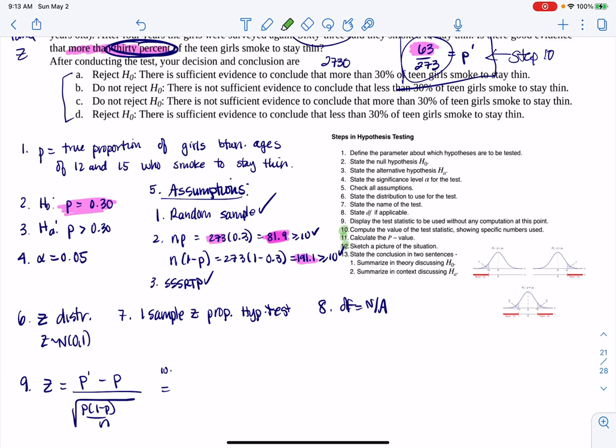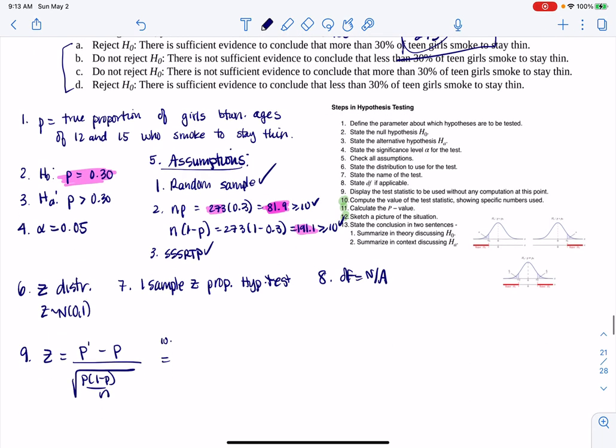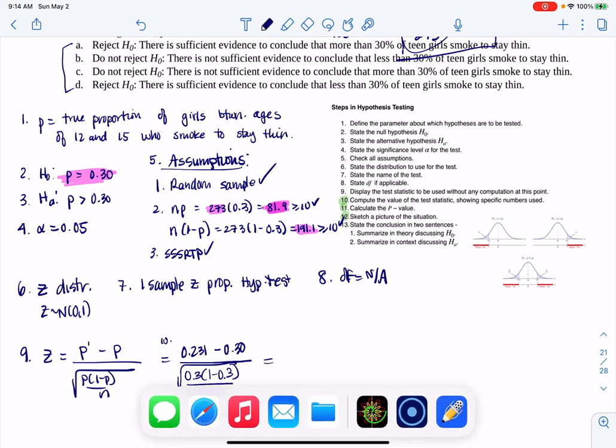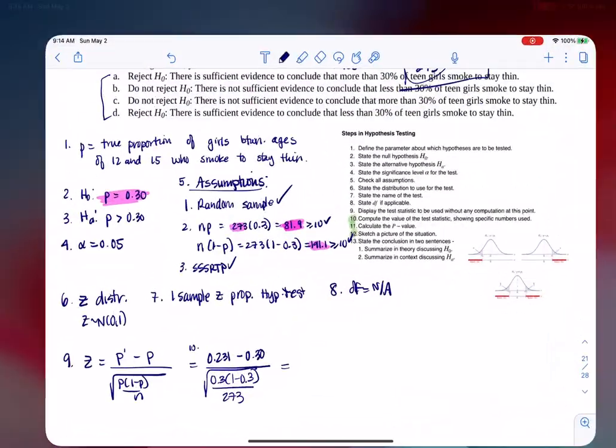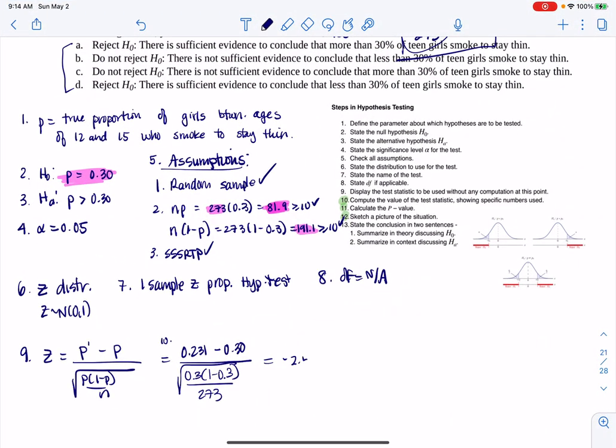This was about 23.1% minus the null percent of 30%. So that's a pretty big gap when I see 23% to 30%, that's a 7% gap. Over 0.3(1-0.3), and then my sample size here was 273. I don't want to calculate that number and I don't have to. I'm going to go back to my app, it looks like that number was -2.496.